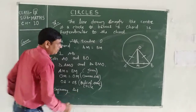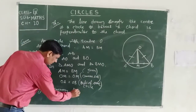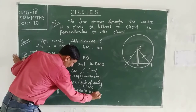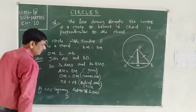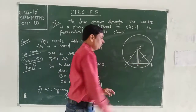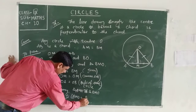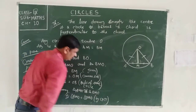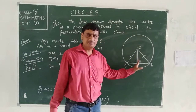OA and OB are radii, so they are equal. By SSS congruence, triangle OAM is congruent to triangle OBM. Therefore by CPCT, angle OMA equals angle OMB.